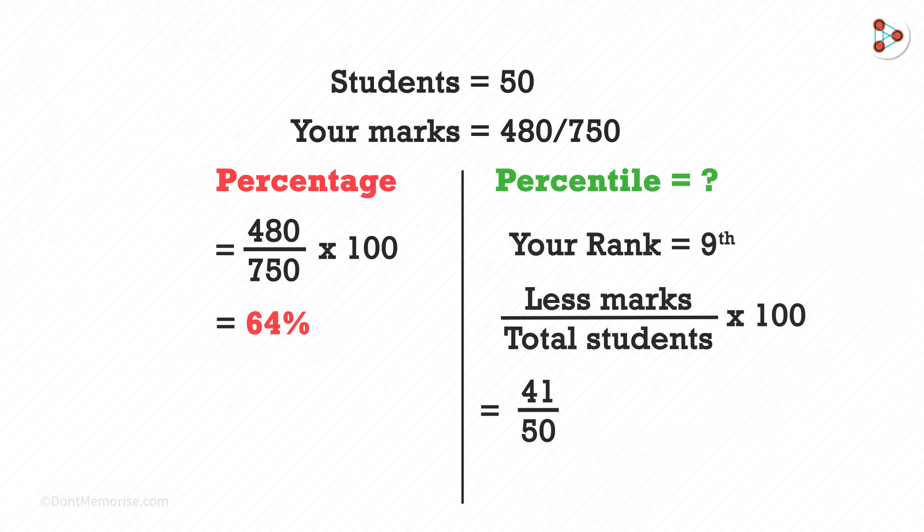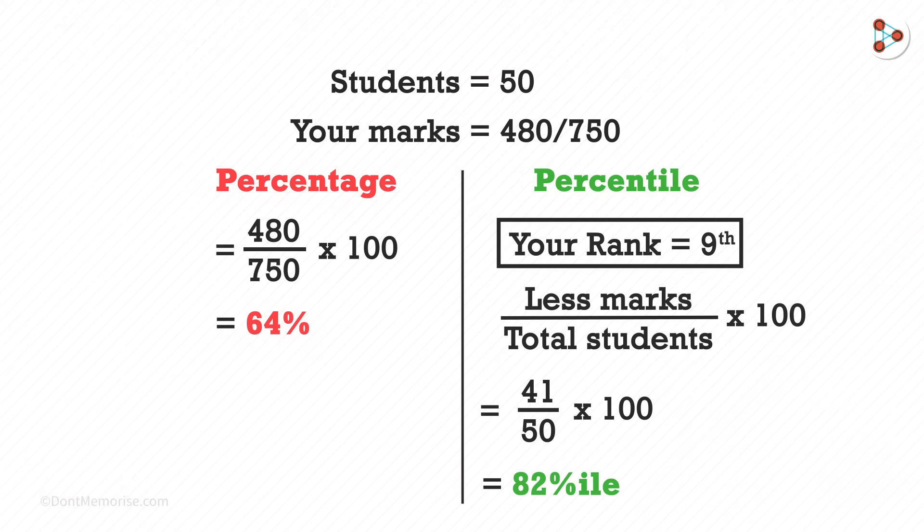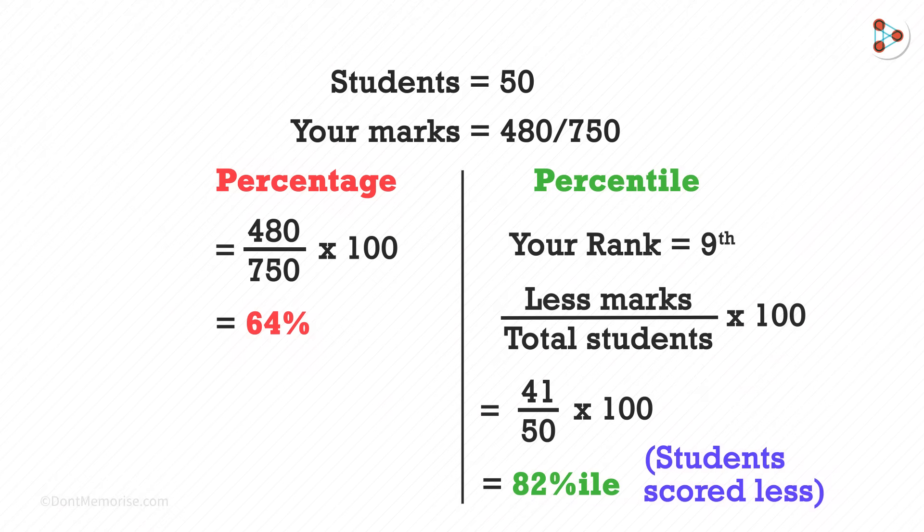So 41 divided by 50 multiplied by 100 is 82. So the answer is 82 percentile. As your rank is ninth in the class your percentile is 82. This means 82 percent of the students have scored lesser marks than you did.